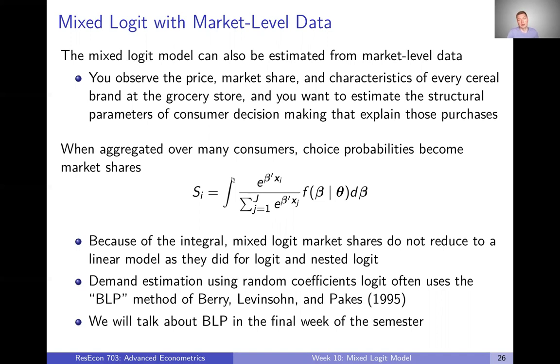And so we're going to have to do something more complex to estimate this, even with this aggregated market level data. Oftentimes, some instruments are needed here to deal with endogeneity. And so there's this classic demand estimation using random coefficients logit. The method that's classically used here is called BLP, following on a paper by Berry, Levinsohn, and Pakes. We will talk about BLP estimation in the final week of the semester. We're going to do a very cursory discussion of it, but we will talk about it a little bit just because it is so common. I want to make sure you get some coverage of that topic.